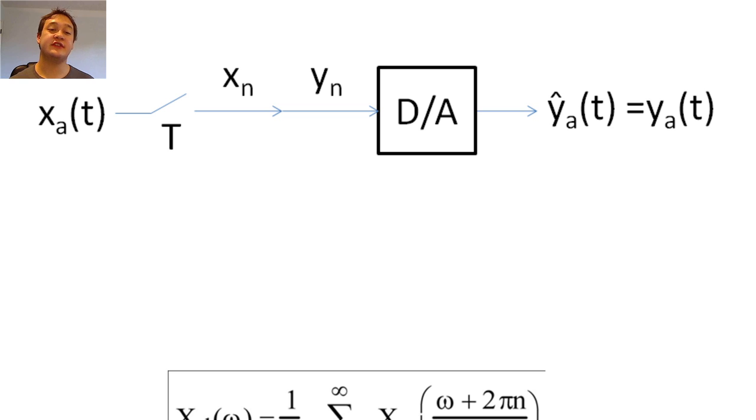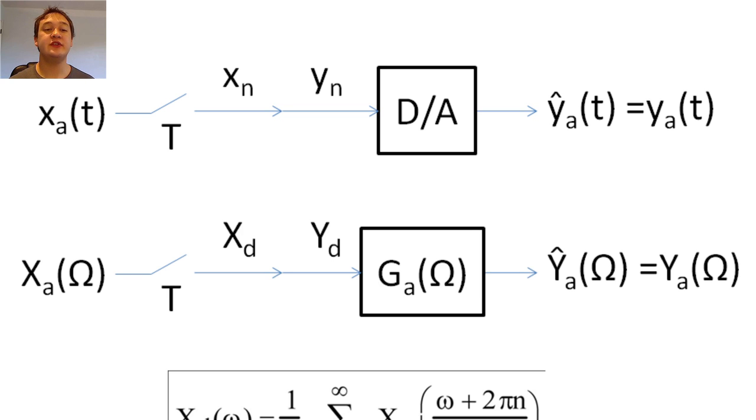It is easier to discuss the intricacies of sampling if we look at the frequency domain. Since we are using the frequency domain, we will also treat our D2A converter as an analog filter, G sub a of omega.